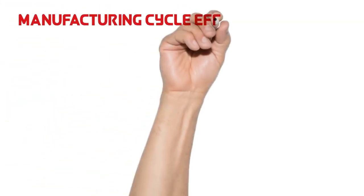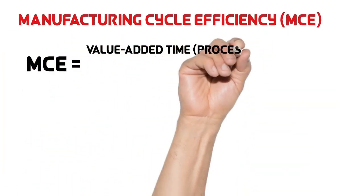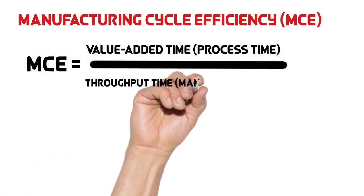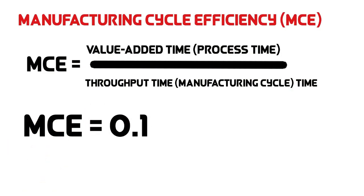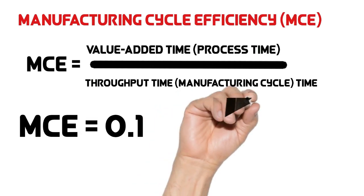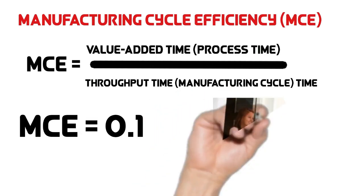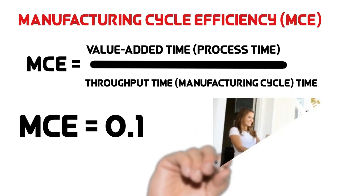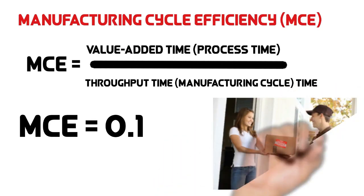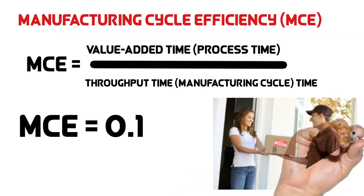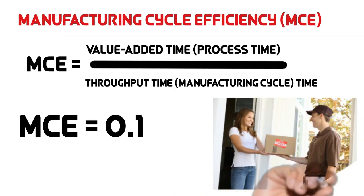We calculate manufacturing cycle efficiency by dividing value-added time by throughput time. If manufacturing cycle efficiency is less than 0.1, it means 90% of the time a unit is in process is spent on activities that do not add value to the product. Monitoring manufacturing cycle efficiency helps companies reduce non-value-added activities and get the product into the hands of customers more quickly and at a lower cost.